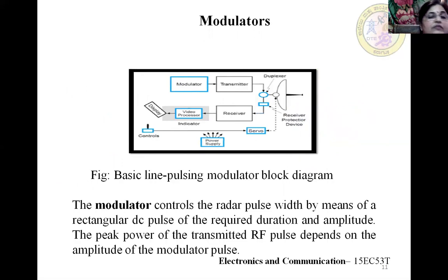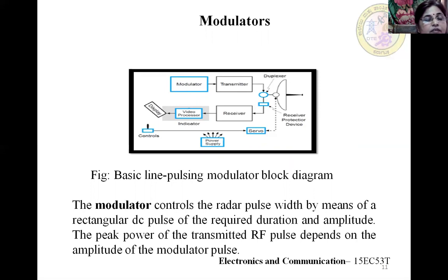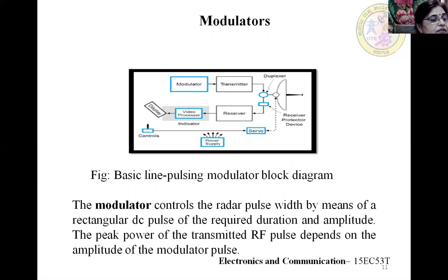This was about the branch type duplexer structure. In this duplexer, we studied the TR switch and the ATR switch, and how radar signals are transmitted through the transmission line through the antenna, and how signals are received from the antenna to the receiver using these ATR and TR switches.